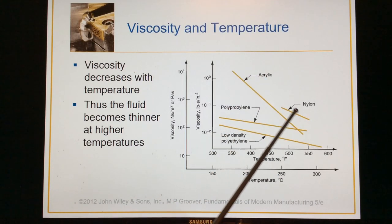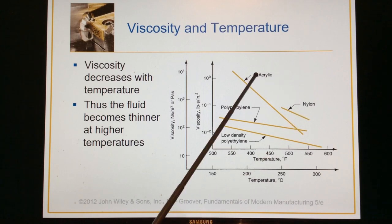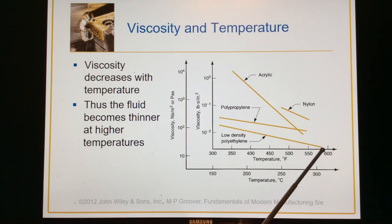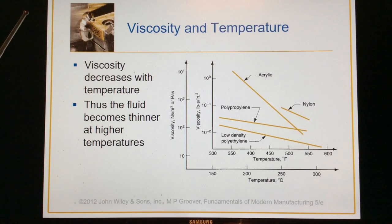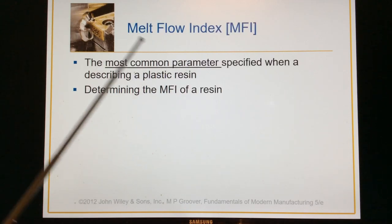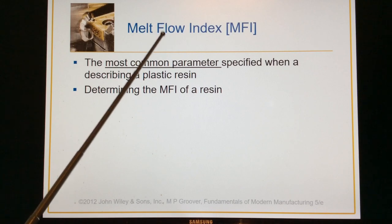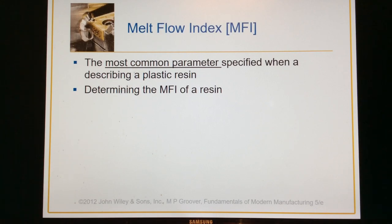This slide shows the viscosity relationships of some thermoplastics. There's nylon, acrylic, polypropylene, and LDPE — low-density polyethylene. You can see that as the temperature increases, the viscosity goes way down; it gets thinner. This is how injection molding processors need to know what the thermoplastic's MFI is, because it's a relationship between the actual viscosity of the polymer melt and its molecular weight.